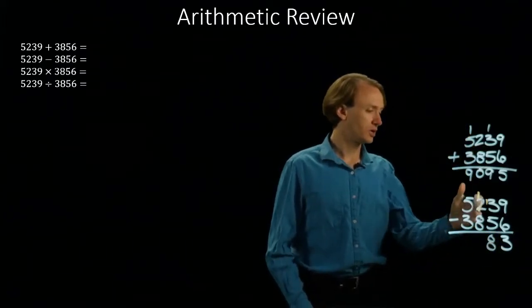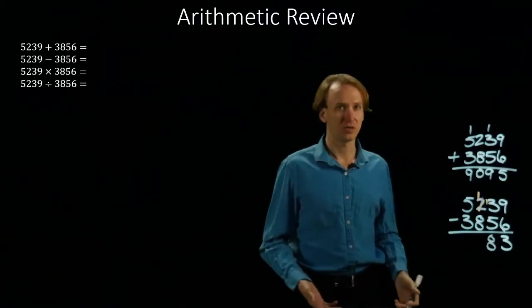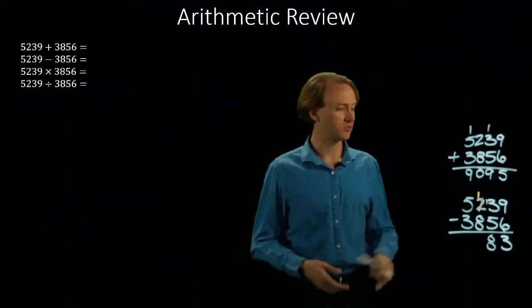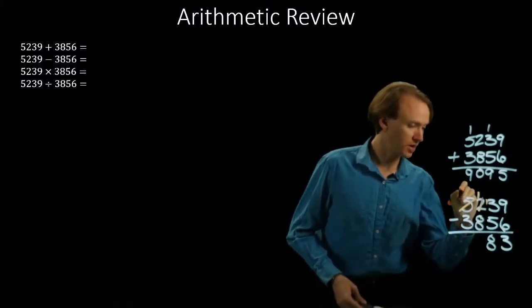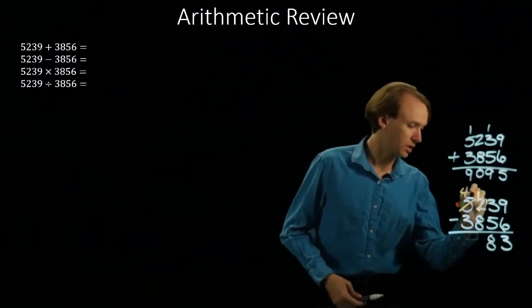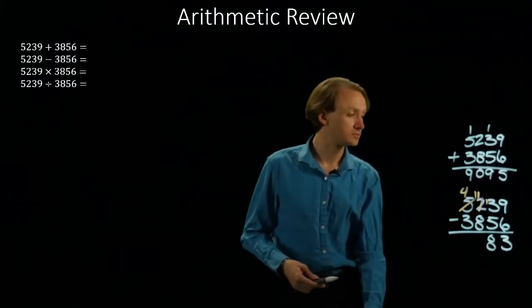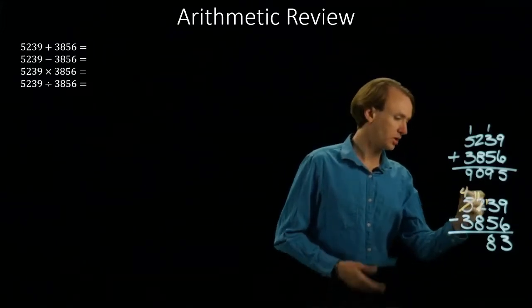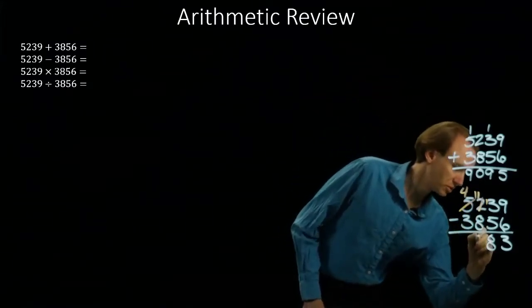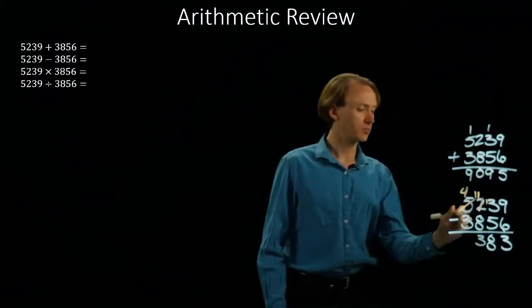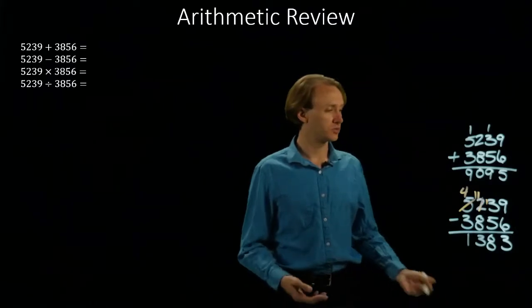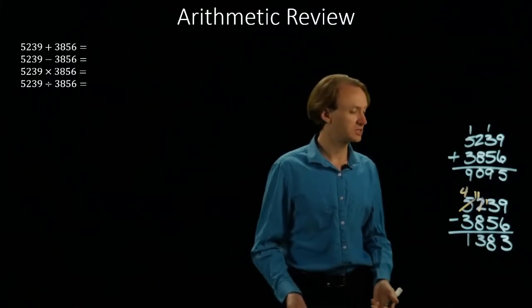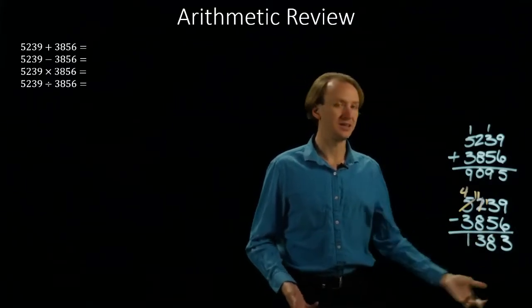Now I'll go over here. I've got 1 minus 8. Well, 1 is smaller than 8, so I'm going to need to borrow something from my next position. 5 will become a 4, and the 1 will become an 11. Now I can do 11 minus 8. It leaves me with 3. And 4 minus 3 leaves me with 1. So 5239 minus 3856 gives me 1383.